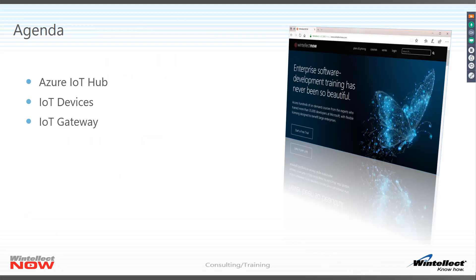For today's agenda, we're going to look at four different things related to Azure IoT. We're going to look at Azure IoT in general, Azure IoT Hub, actual devices and how they connect to Azure IoT Hub, Azure IoT Edge, and the Device Provisioning Service. I really want to focus on the first two, which are the bread and butter of what makes Azure IoT happen.